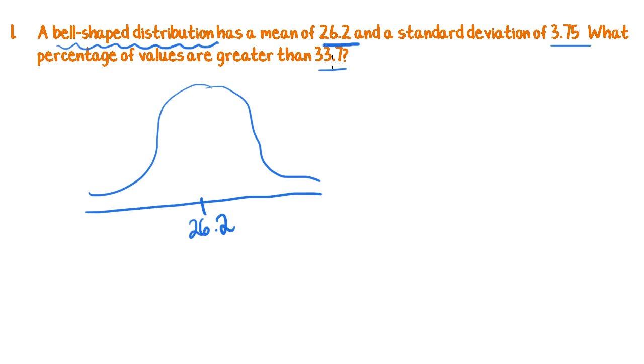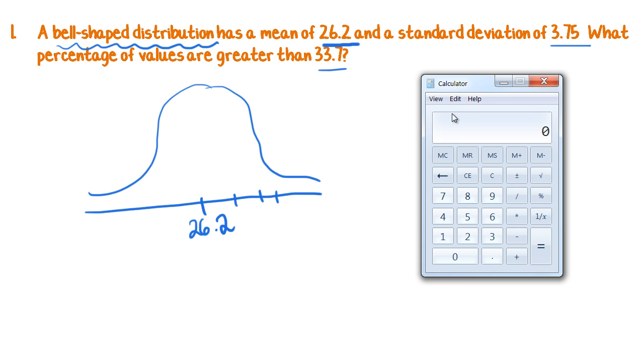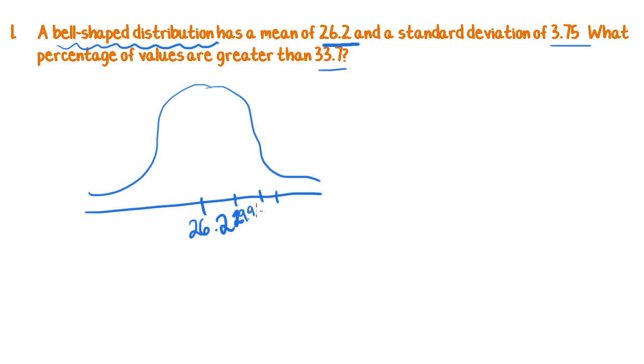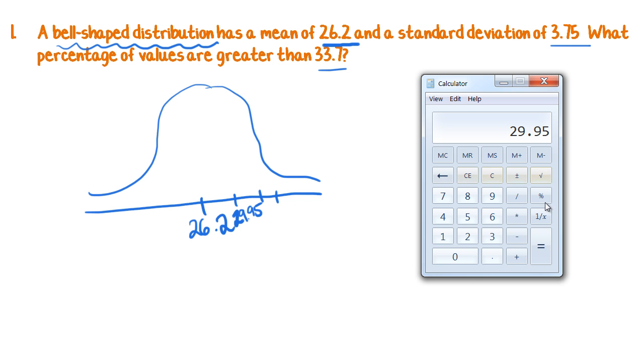Now what I'm looking for is 33.7, so that's upwards of this point. So I'll start by calculating those ones. So 26.2 plus 3.75. So I'm just going to do that on my calculator. So 26.2 plus 3.75 is 29.95. And again, we get to 33.7.